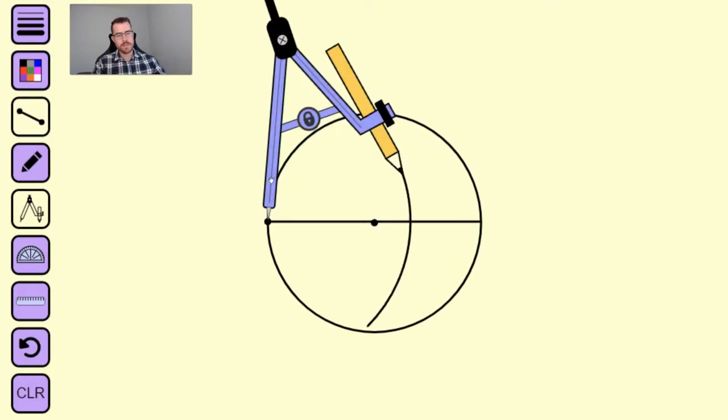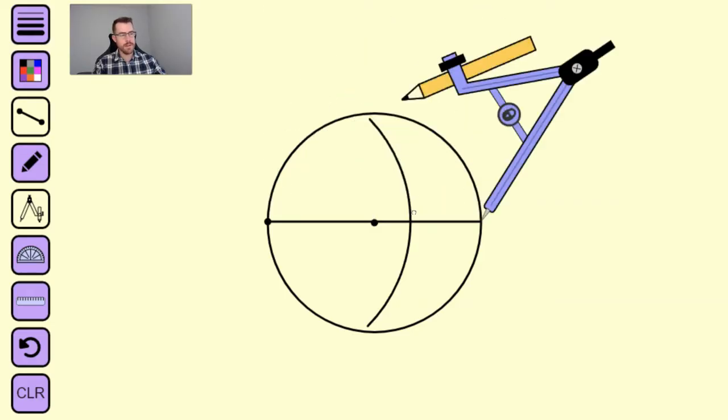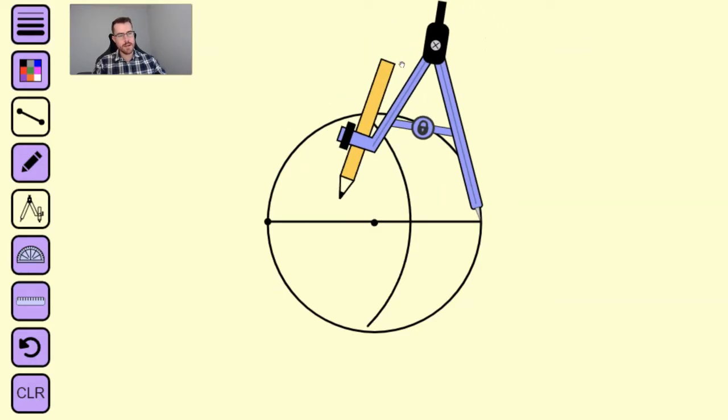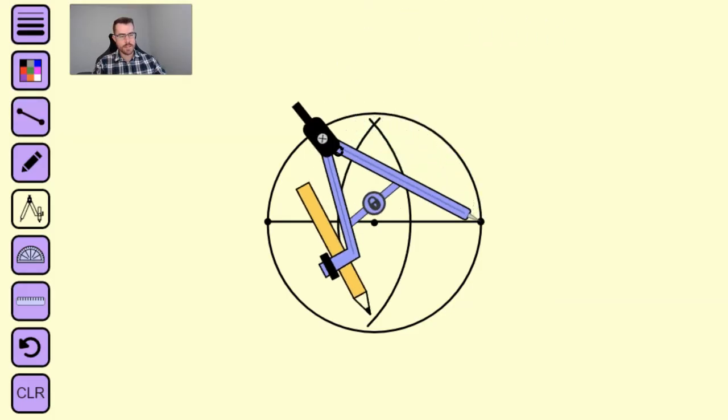Then do the same thing from the other side. Put your needle on the other endpoint and trace arcs up and down.